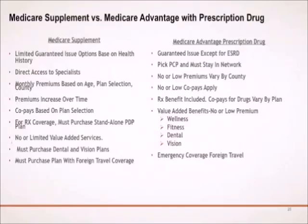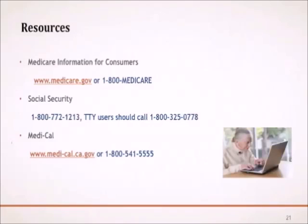Key consideration 6: Generally, supplement plans have no or limited value-added services. For no or low premiums, MAPD plans do include value-added benefits such as wellness, fitness, dental, and vision. Key consideration 7: If you travel outside the United States, for emergency coverage with supplement plans, you must purchase a plan with foreign travel coverage. With MAPD plans, urgent and emergency coverage is provided for foreign travel, though coverage limits vary by health plan.